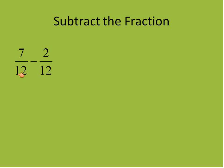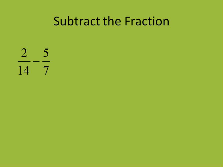Let's subtract a new one. This one already has a common denominator of 12: 7/12 minus 2/12. We don't need to find common multiples or common denominators — we just subtract. That gives us 5/12, which is already in lowest terms and is our final answer.